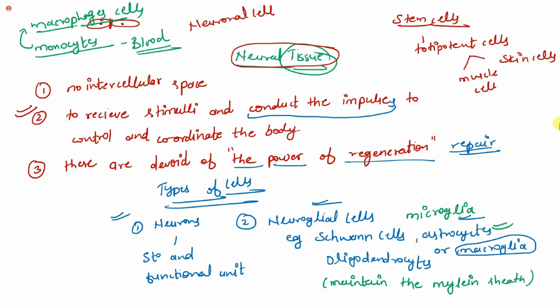Besides these, there are other specific cell types present in the nervous system. In the brain, there are ependymal cells, whose function is to line the brain and spinal cord — they form the lining of the cavities present in the brain and spinal cord.